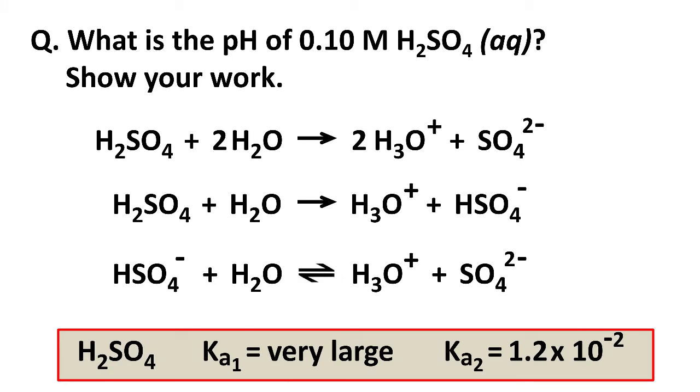In fact, here are the values for Ka1. It's so large, it's pretty much impossible to measure. We just say very large, 100% dissociation, and then Ka2 is 1.2 times 10 to the minus second.